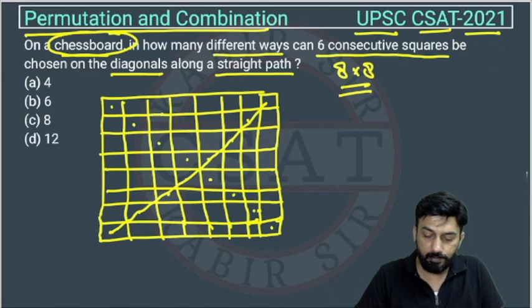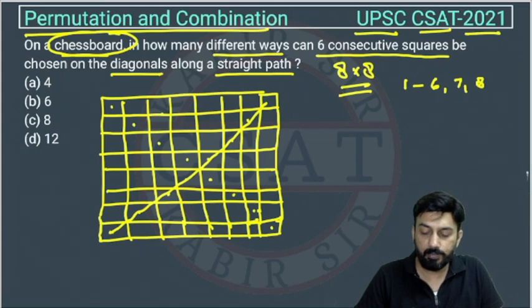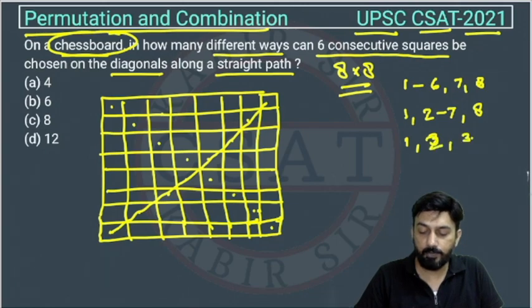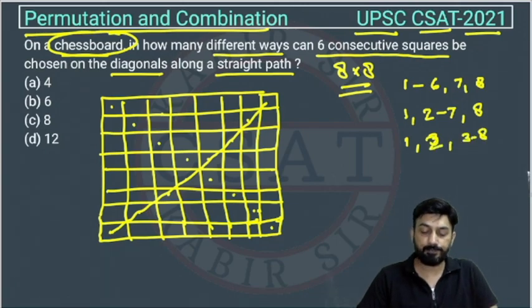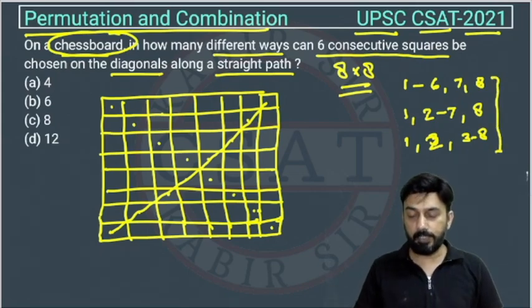Right, so it should be like from 1 to 6, right? Then 7 and 8 are remaining. Or it could be, when we are leaving one, then it will be 2 to 7, right? Then this 8 will remain. Or leaving 1 and 2, we are not choosing first and second, we are choosing from 3 to 8, right? So only these 3 possibilities exist.